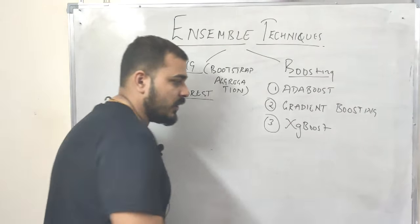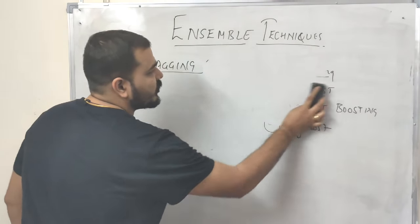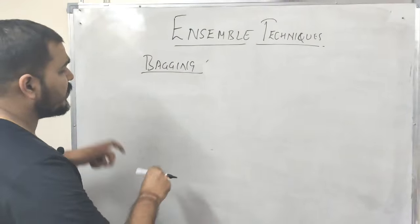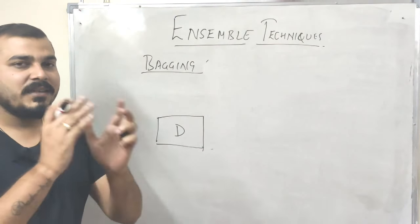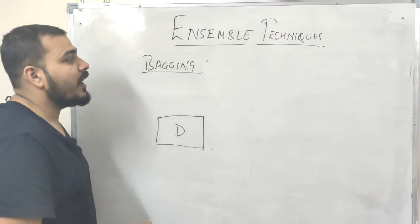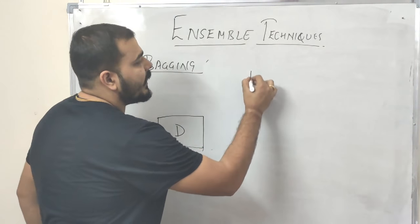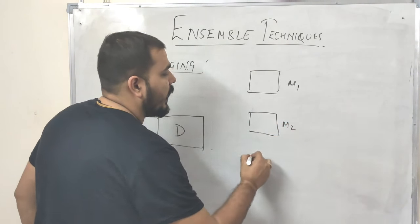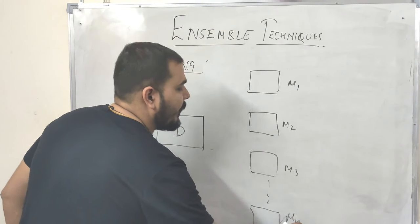Let us go ahead and understand what is bagging. Bagging is also called as bootstrap aggregation. Suppose initially for a particular problem statement I have a dataset D, and this dataset has many rows. Since ensemble means combining multiple models, similarly here we'll be creating many multiple base learners or base models like m1, m2, m3, and many more up to mn.